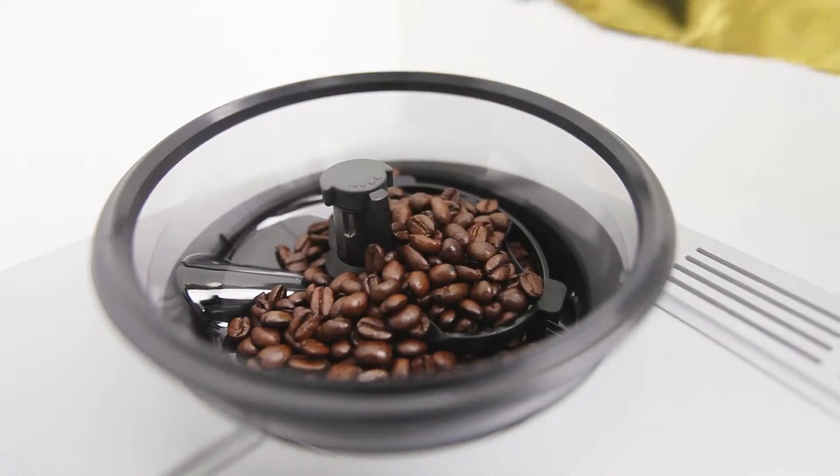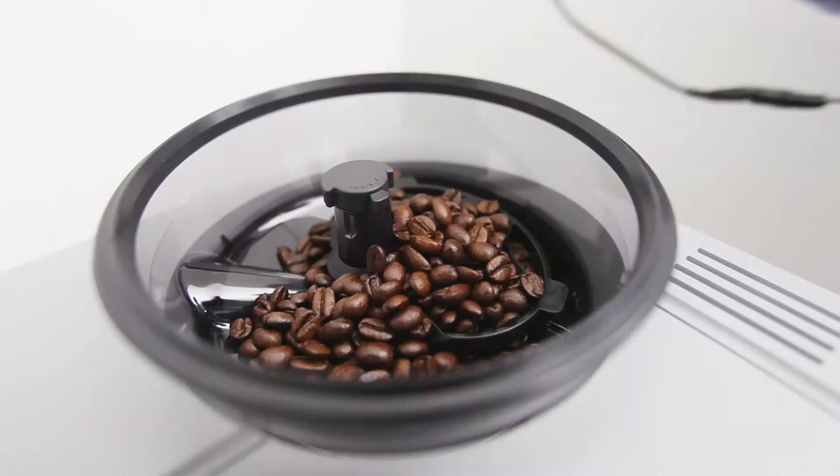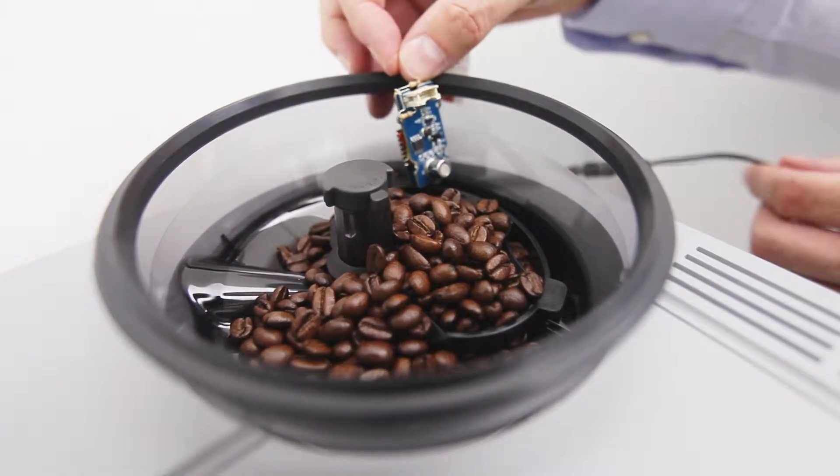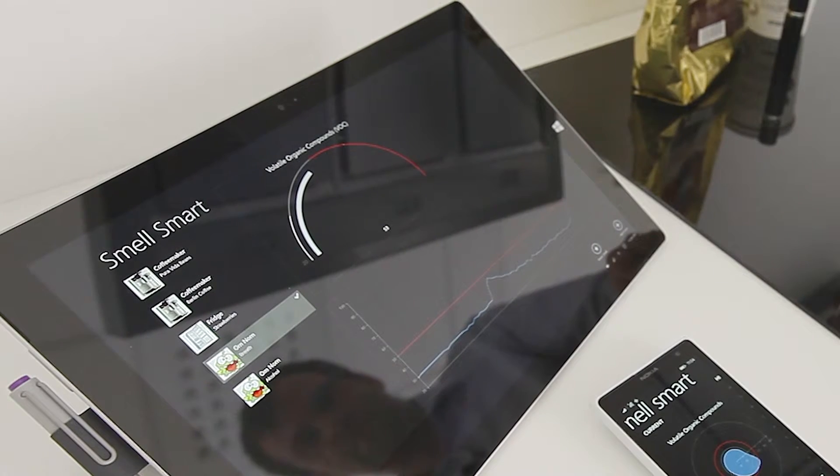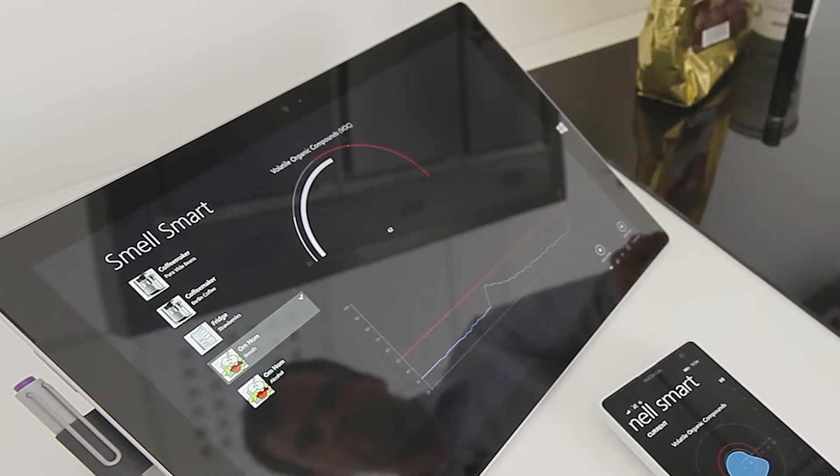The coffee beans are usually stored in a tank in the coffee machine. We have placed our sensor in this tank and are already able to measure the values during filling. If the beans are kept in the tank for longer, this value will continue to decrease.